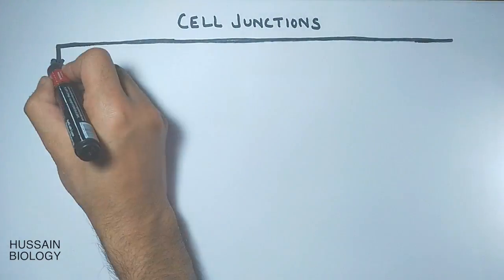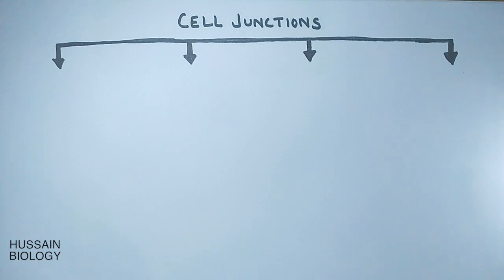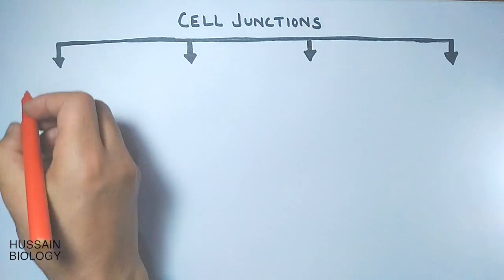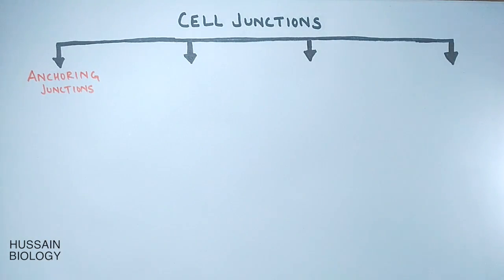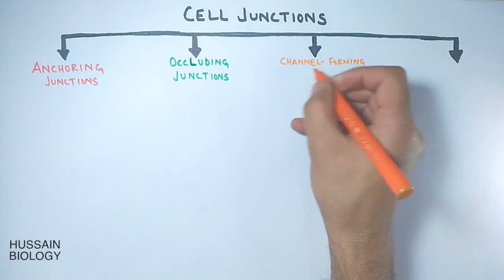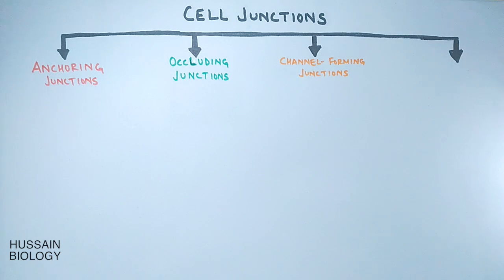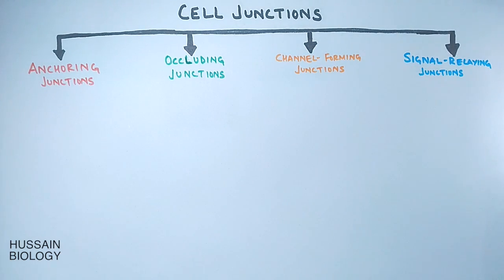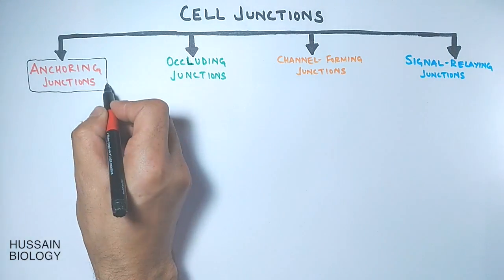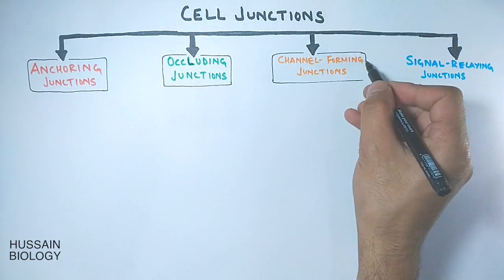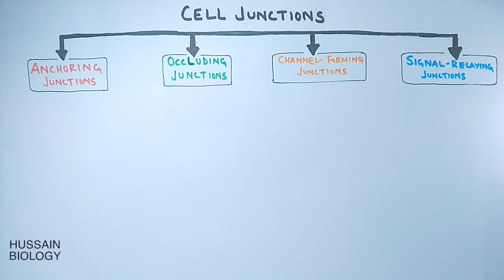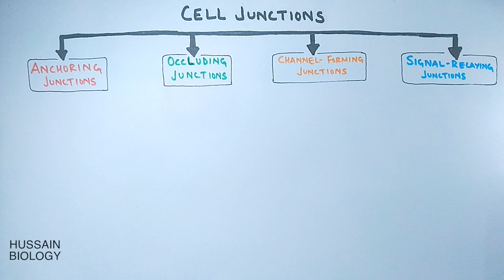Now let's see the different types of cell junctions present within living organisms. There are four types: first, anchoring junction; second, occluding junction; third, channel forming junction; and fourth, signal relaying junction. Sometimes you might read that there are only three types — anchoring, occluding, and channel forming — because the signal relaying junction can arise from any of those three. For example, a channel forming junction can also act as a signal relaying junction, which is why most sources describe only three types.